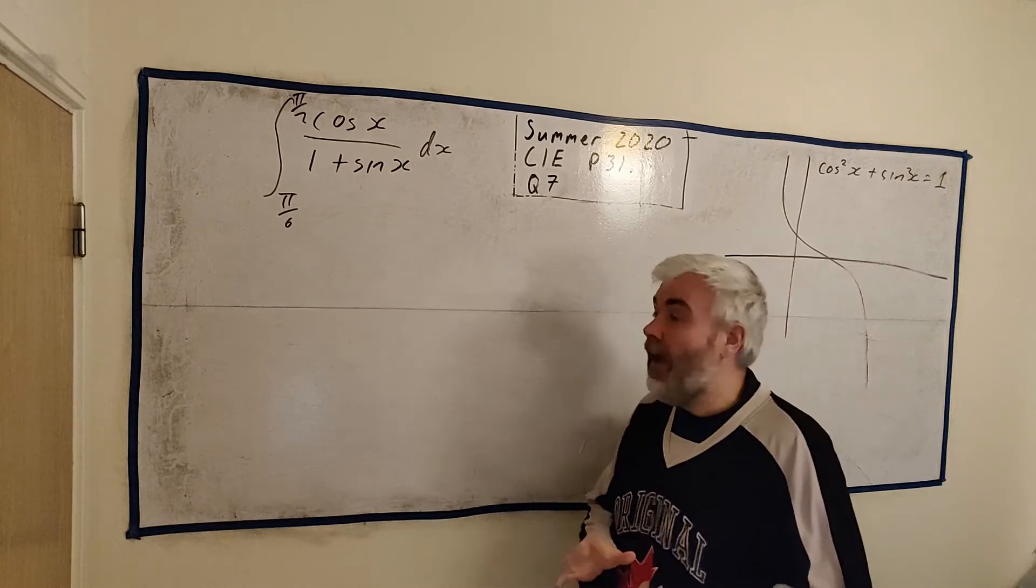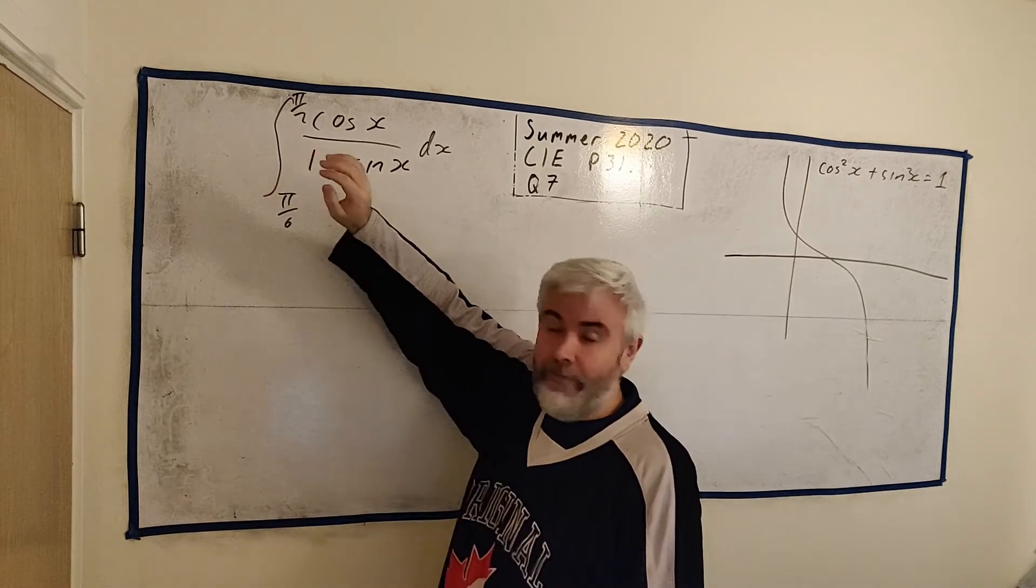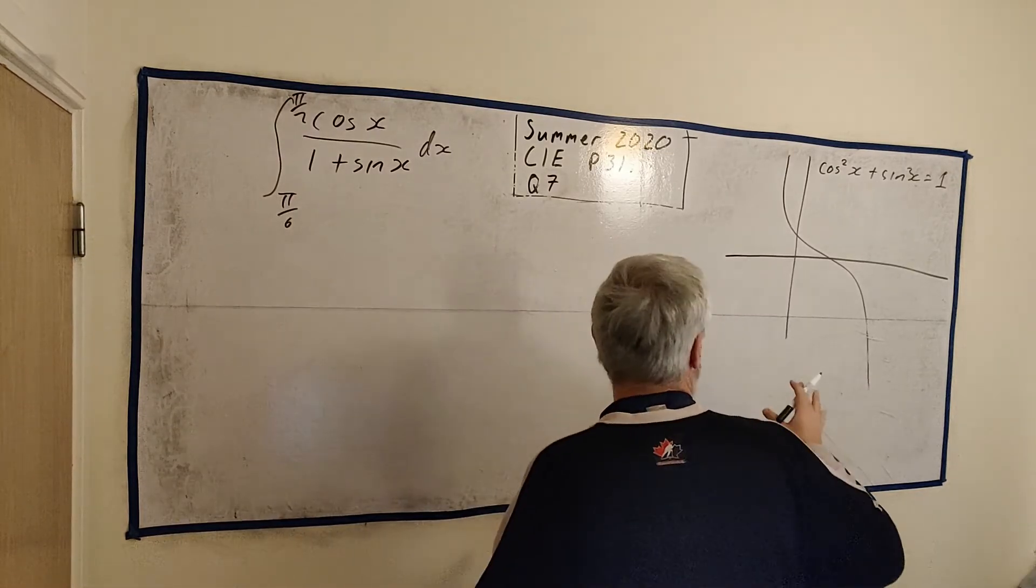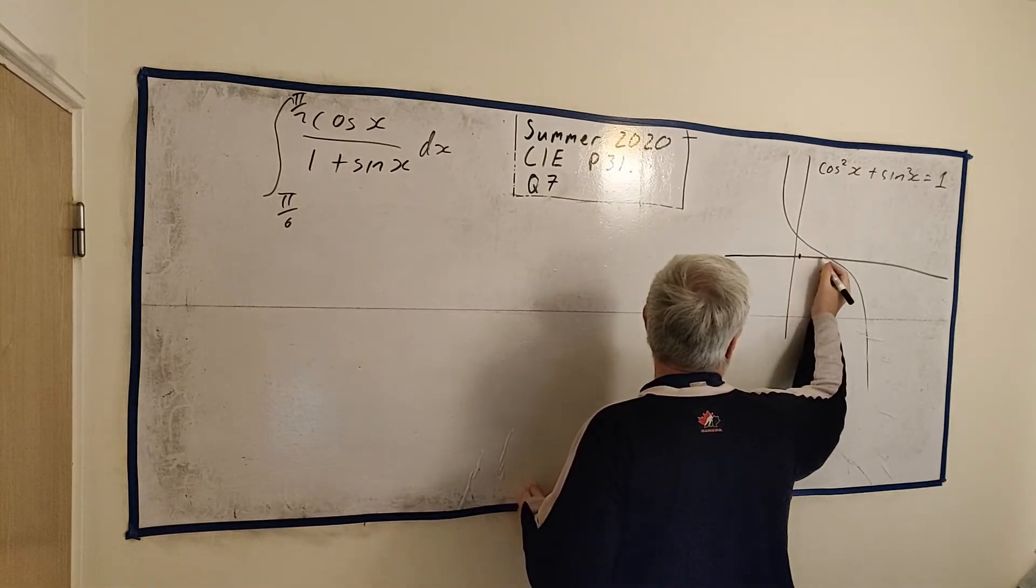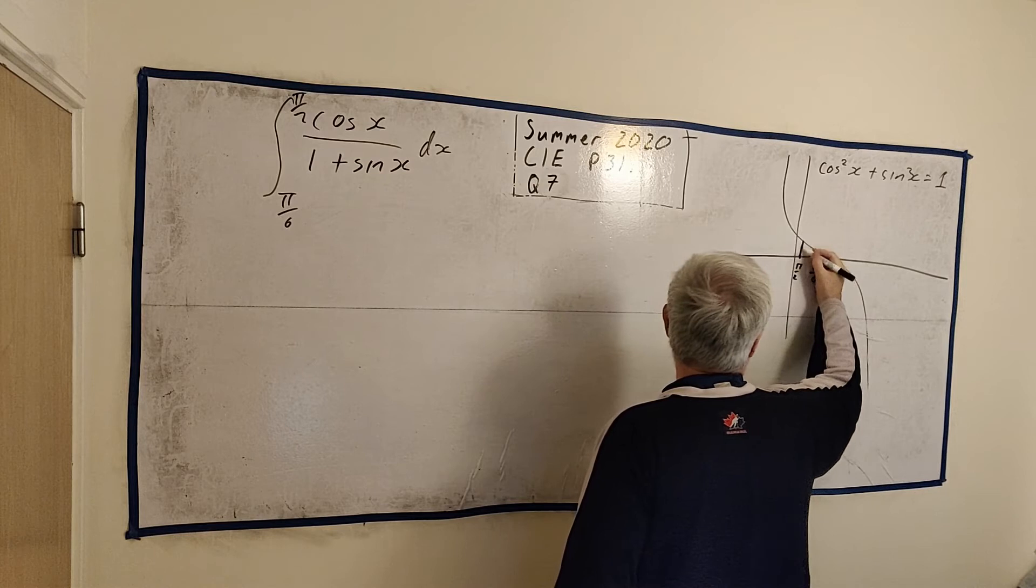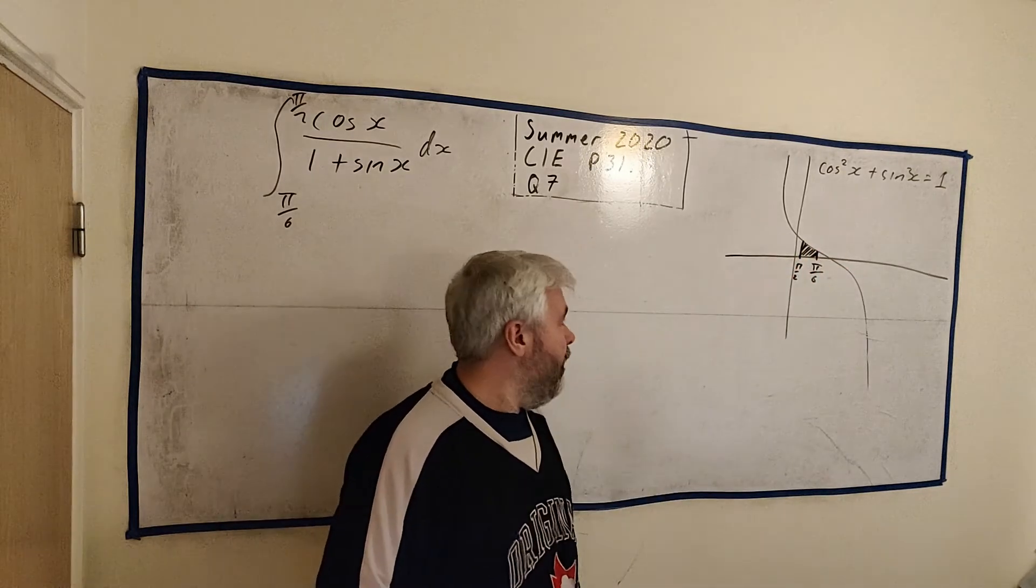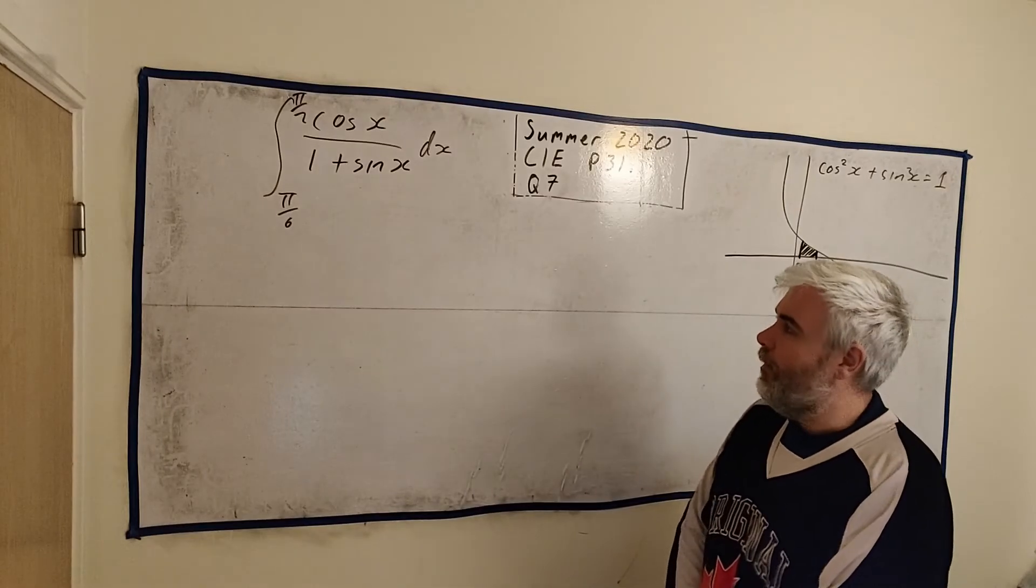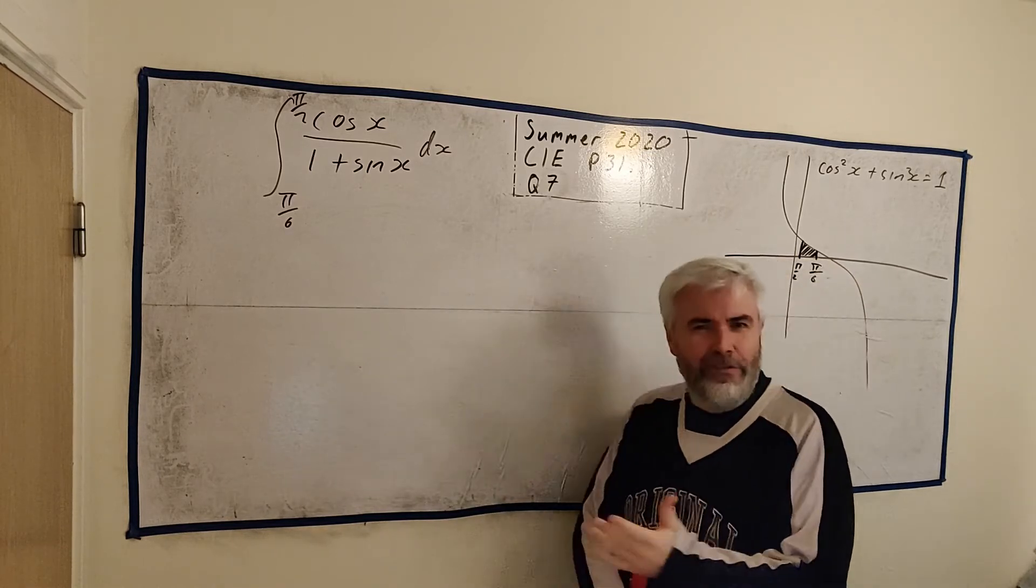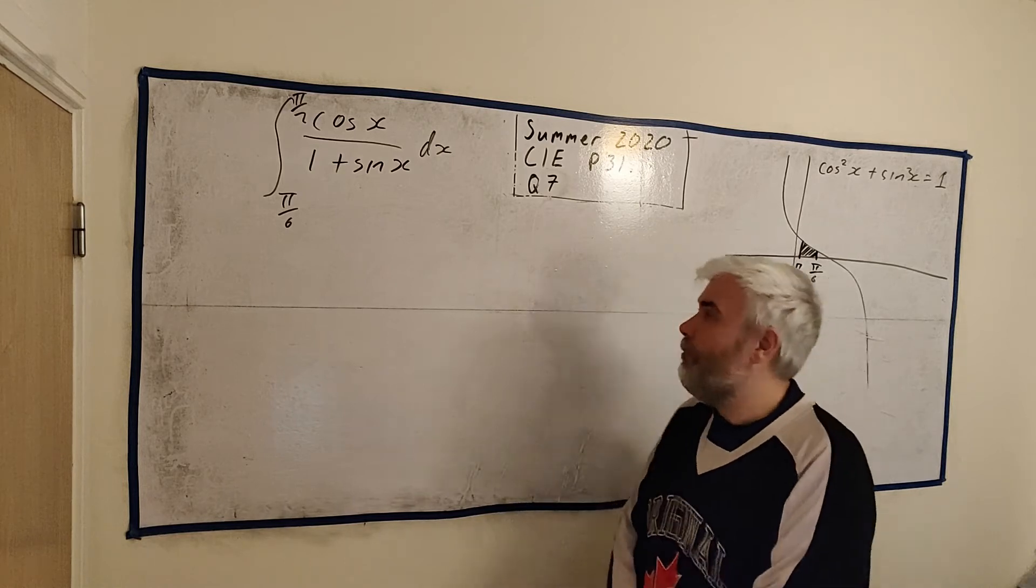Part B, they ask us to find the integral of f(x). I've just replaced f(x) with the actual function, just so we can see what we're doing. Basically, they want to find the integral of this between π over 6 and π over 2. Just to remind you what that looks like, here's the graph still. So π over 2 might be here, and π over 6 is here. And what finding the integral does is finds us the area of this shape. We don't use any of the information from part A, really.